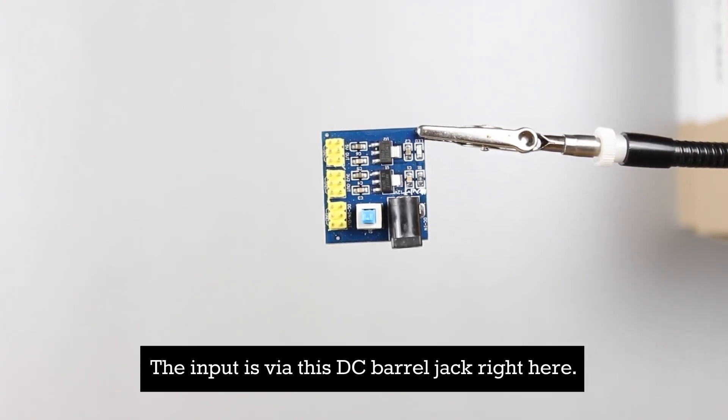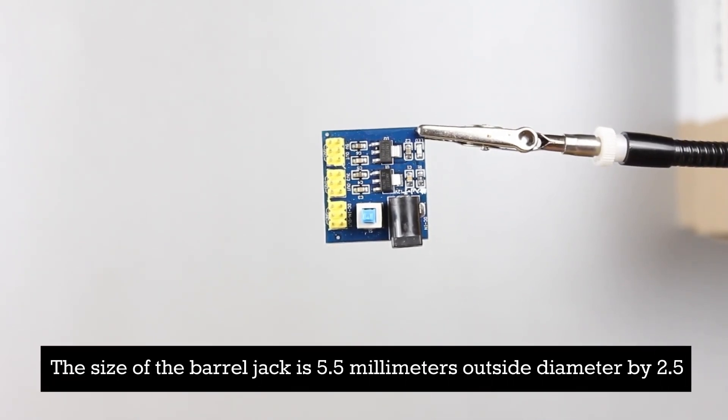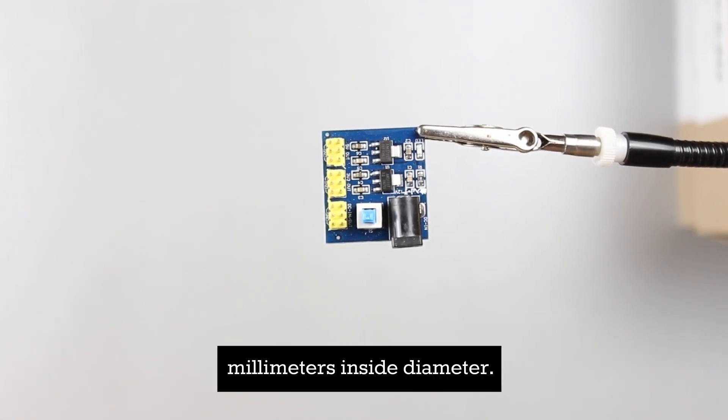The input is via this DC barrel jack right here. The size of the barrel jack is 5.5 millimeters outside diameter by 2.5 millimeters inside diameter.